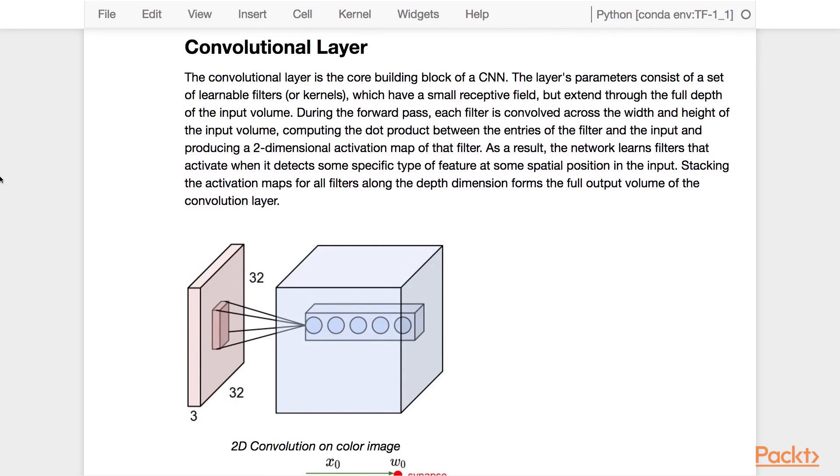The convolutional layer is the core building block of a CNN. The layer's parameters consist of a set of learnable filters or kernels, which have a small receptive field but extend to the full depth of the input volume. During the forward pass, each filter is convolved across the width and height of the input volume, computing the dot product between the entries of the filter and the input, and producing a two-dimensional activation map of that filter.